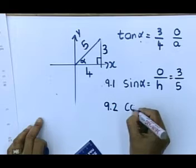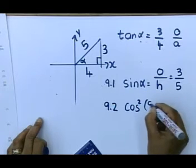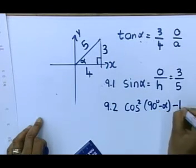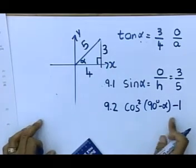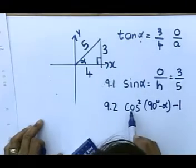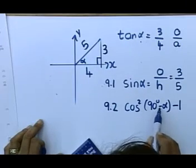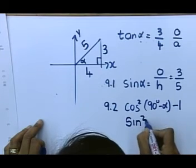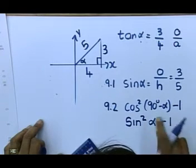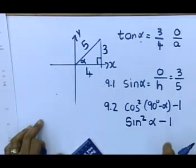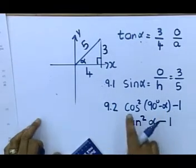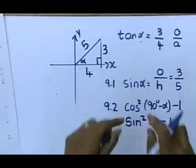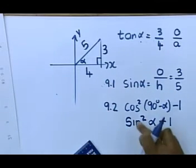Die tweede vraag daar, wat is die cos kwadraat van 90 minus alpha minus 1? 90 minus alpha minus 1. Onthou die cos van 90 minus alpha, it becomes sin squared alpha. Remember this is called a co-ratio. Dit is 'n co-funksie. So draai jy sien 90 minus alpha, dan gaan cos na sin toe, of sin gaan na cos toe.